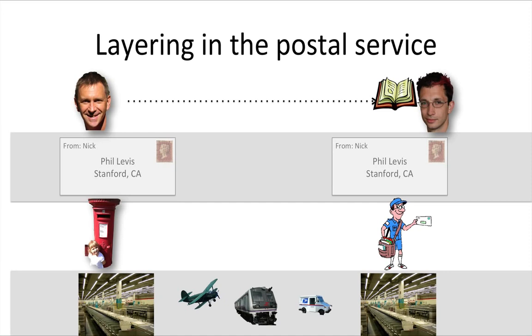In turn, Olive doesn't need to know how the Postal Service delivers the letter. She simply communicates with the layer below by posting the letter. Phil just wants the book.